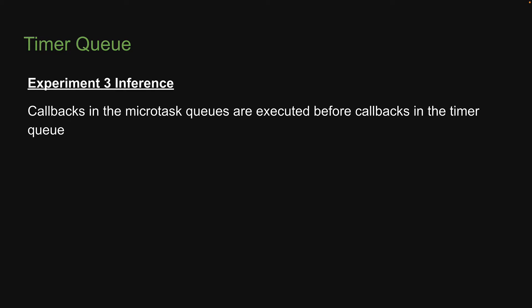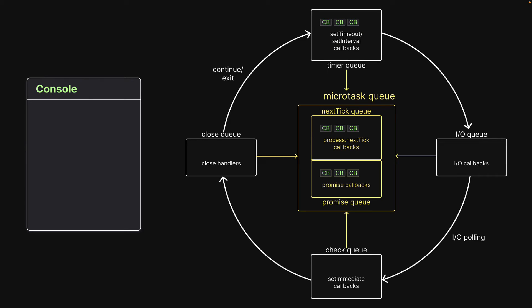Let me quickly help you with the visualization. When the call stack executes all the statements in our code snippet, we end up with three callbacks in the next tick queue, three in the promise queue, and three in the timer queue. Now there is no further code to execute and control enters the event loop. Here, the next tick queue gets priority, followed by the promise queue, which is then followed by the timer queue.